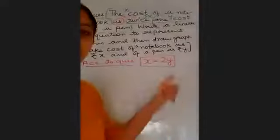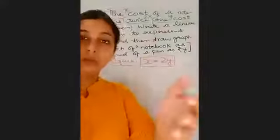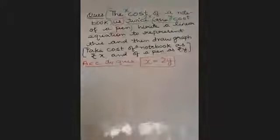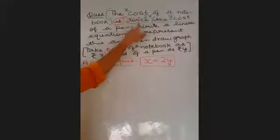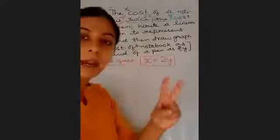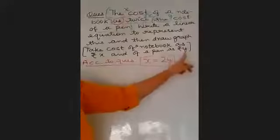I've given you the steps. The cost of a notebook—put it in bracket—in that place you write x. 'Is' will be changed to equals. Twice—two times—times means multiply, so two multiply by what? The cost of a pen. The cost of a pen is y.